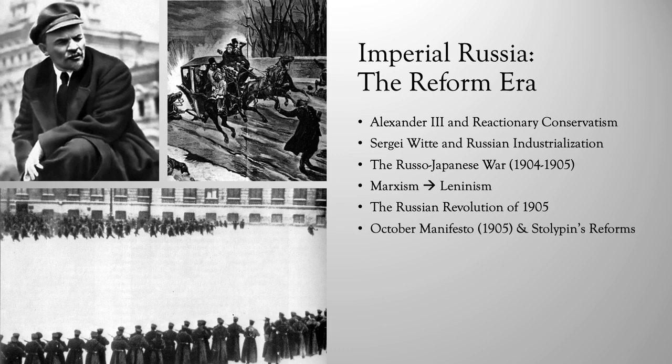As conservative as Alexander III was, he was actually not the worst of the Russian czars of this period. He would be succeeded by Nicholas II in 1894, who promised to continue the conservative policies of his predecessor. However, Nicholas II was a much weaker, more incompetent czar than his predecessors — definitely a candidate for one of the worst monarchs in all of European history.